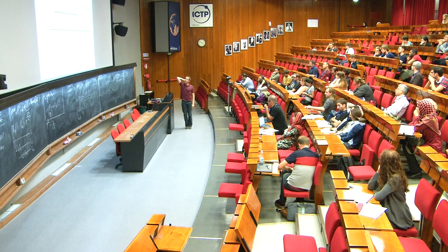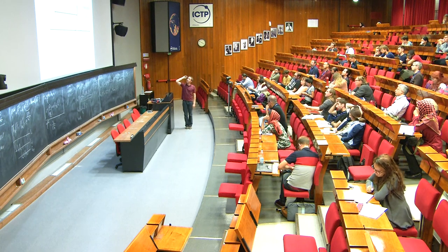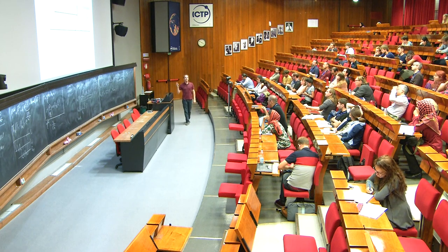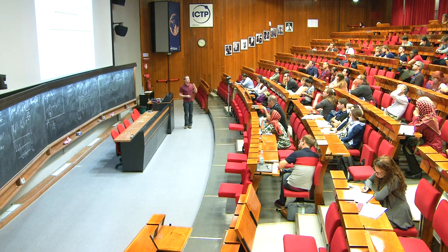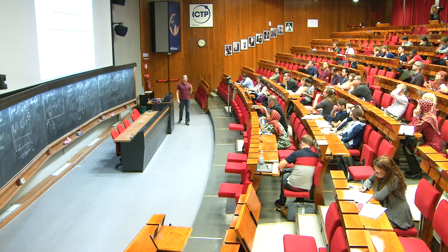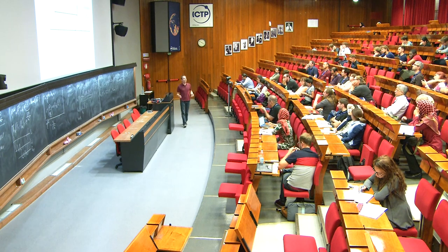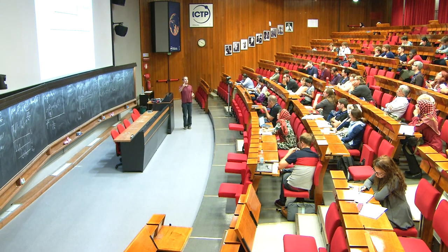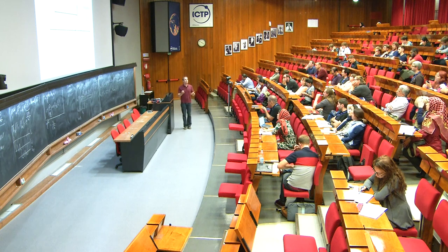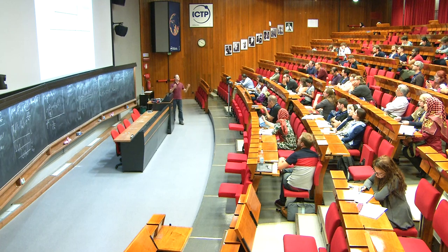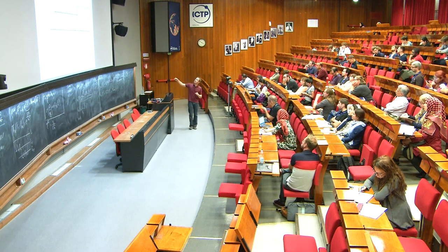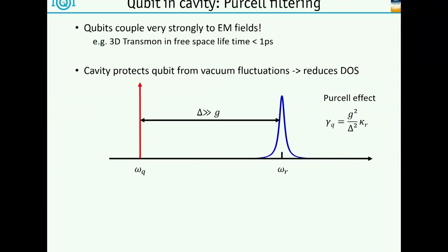What does the cavity bring us? One very important aspect is it actually protects the qubit from the bad environment around. These qubits couple very strongly to electromagnetic fields - essentially also to vacuum fluctuations. If you used one of those 3D qubits out in free space and calculated the lifetime just because of coupling to vacuum fluctuations, you would see it's something like a picosecond or much less. What the cavity really does is reduce the density of states. If the qubit wants to decay and it's not resonant with the cavity, it doesn't have any available modes to decay into - so it can't get rid of its energy. This is called Purcell protection.